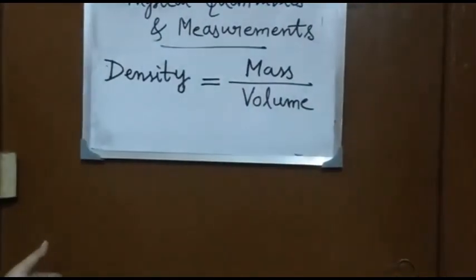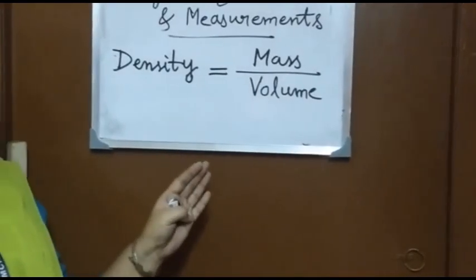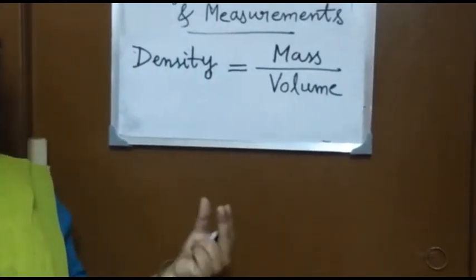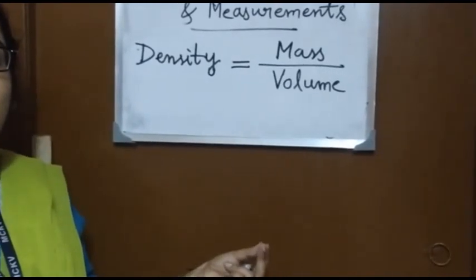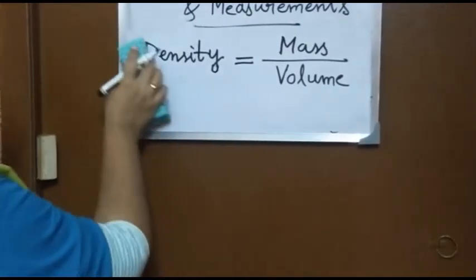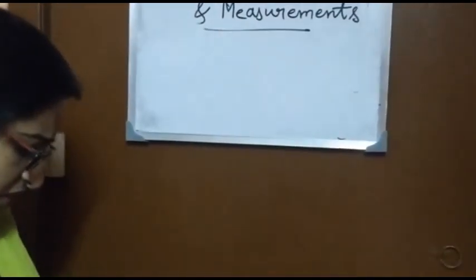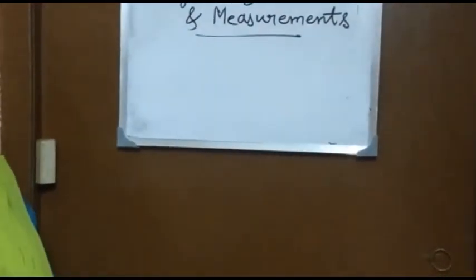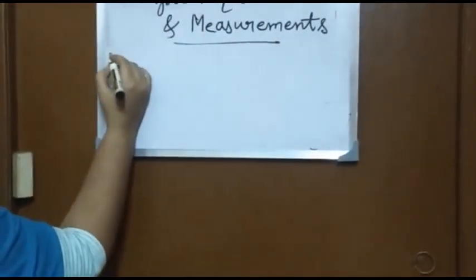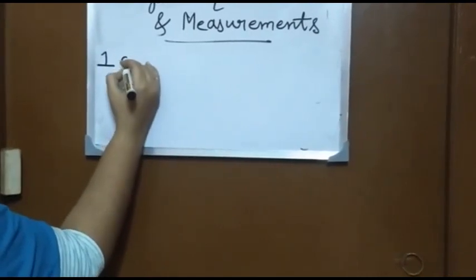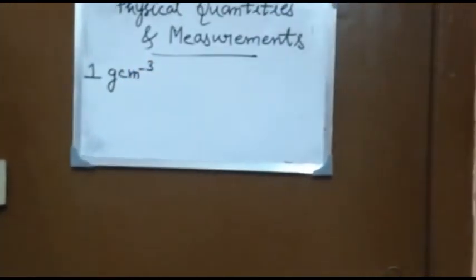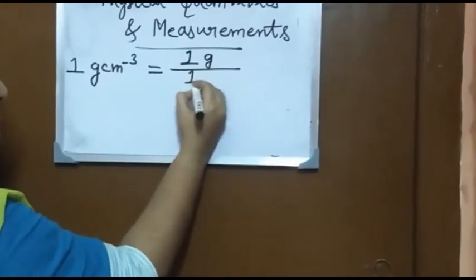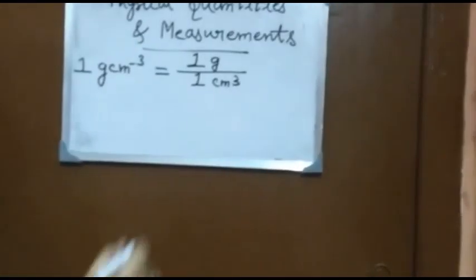If two objects have the same volume but different masses, the object with more mass will have more density. The CGS unit of density is gram per centimeter cube. One gram per centimeter cube means one gram by one centimeter cube. One gram equals 1/1000 kilogram.